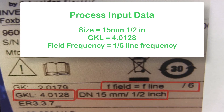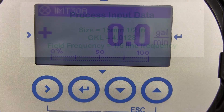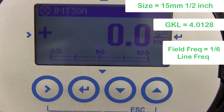For tube size we will be entering in 15 millimeters, one half inch. For GKL value we will enter in 4.0128. And for the field frequency we will enter in 1/6 line frequency. To enter in these three values...